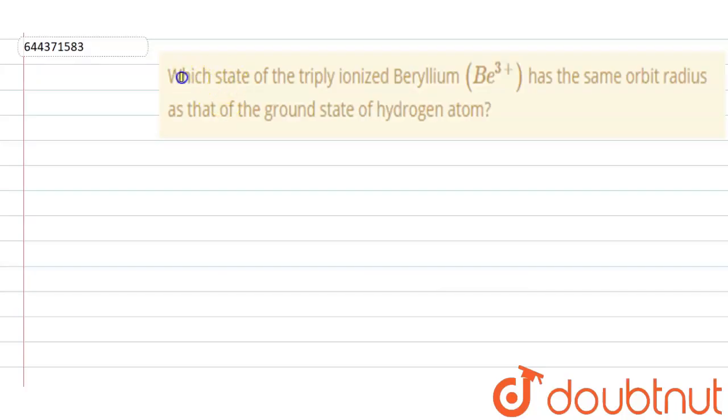Hello students, so the question is, which state of the triply ionized beryllium Be³⁺ ion has the same orbit radius as that of the ground state of hydrogen atom?